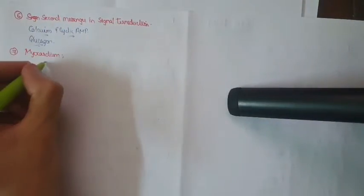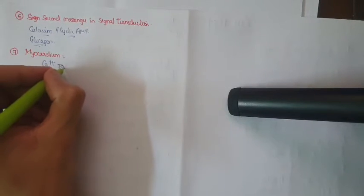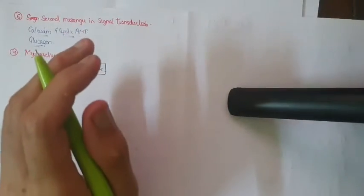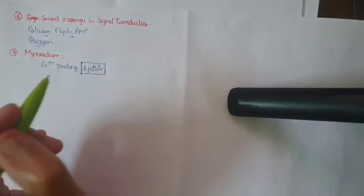The next important point is in the myocardium — calcium is going to prolong systole. In hypercalcemia, cardiac arrest is seen in systole. That is why when calcium is administered intravenously, it must be given very slowly.